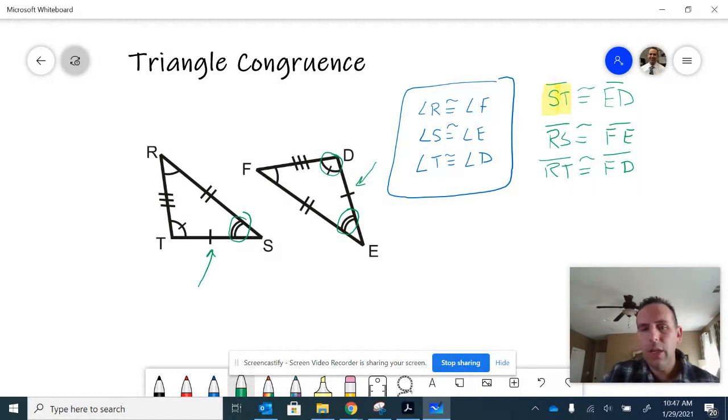That is enough to say the triangles are congruent. So now I can state that. I can say, okay, triangle R-S-T,